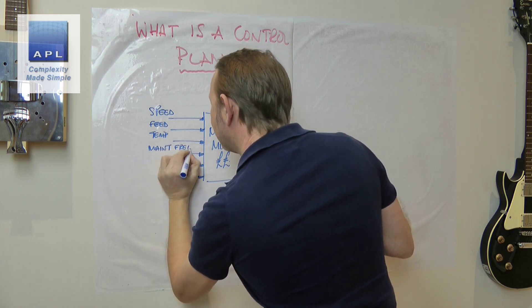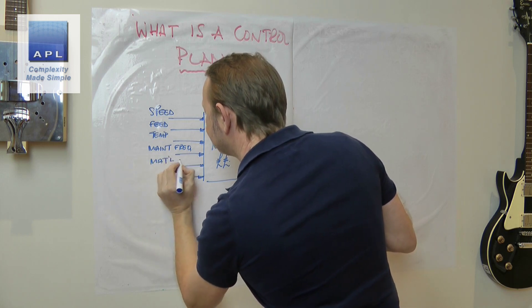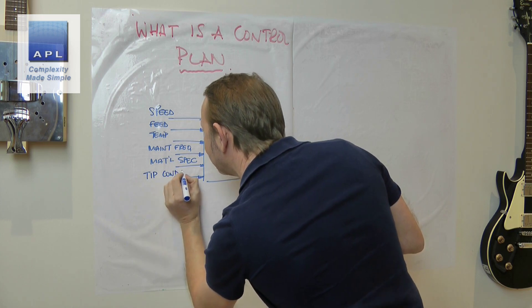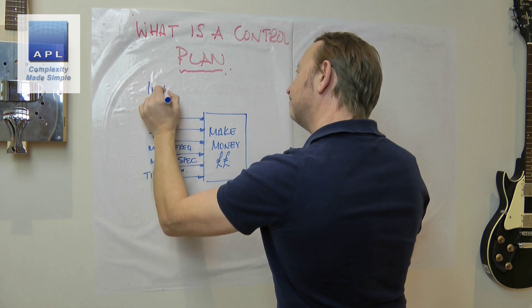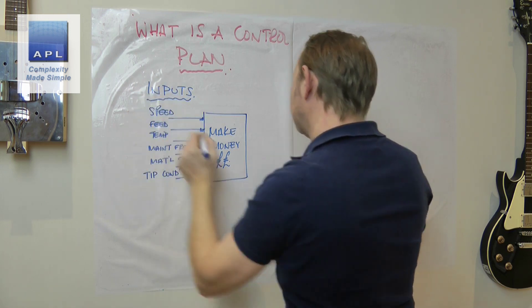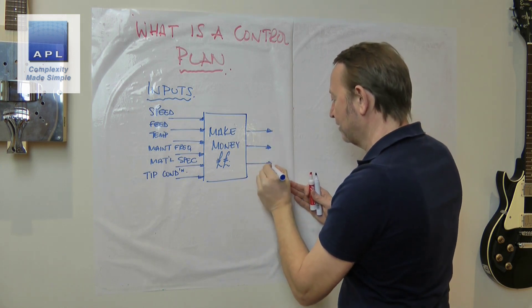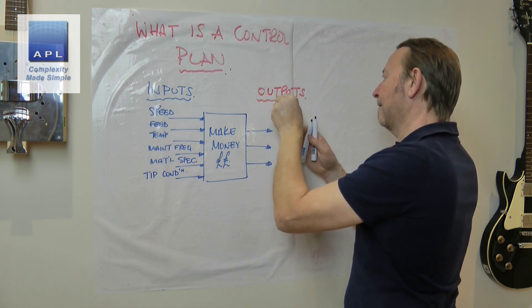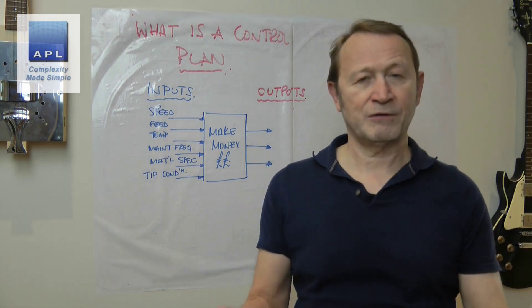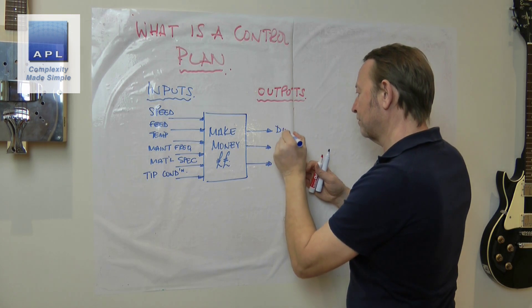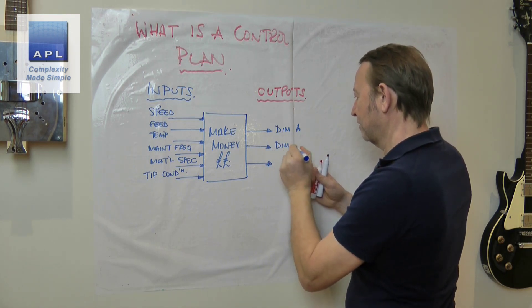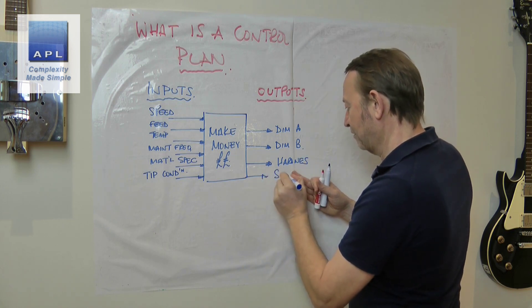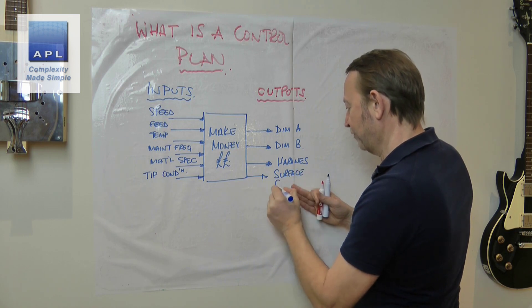The speed, the feed, the material specification, etc. So speed, feed, temperature, maintenance frequency, material spec, I don't know, tip condition. It's a CNC lathe so you've got inputs.